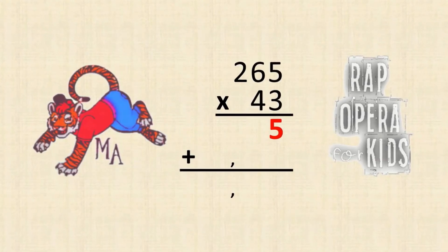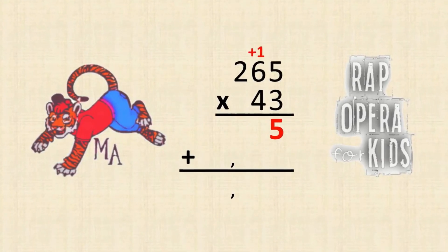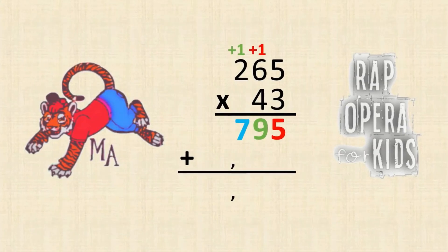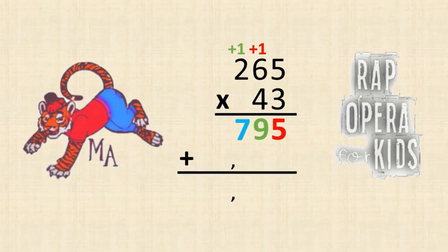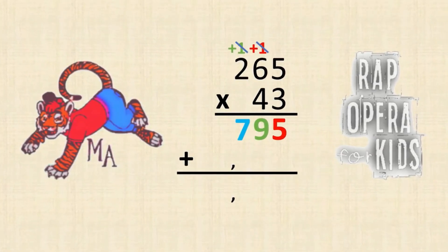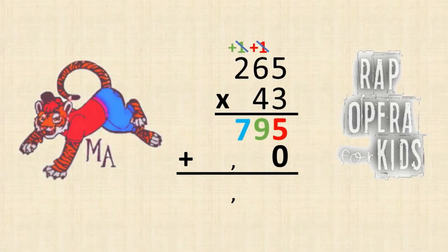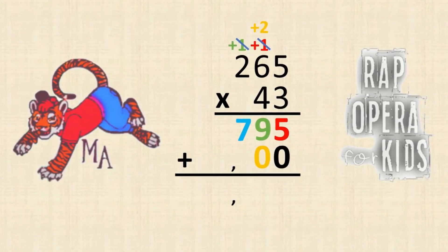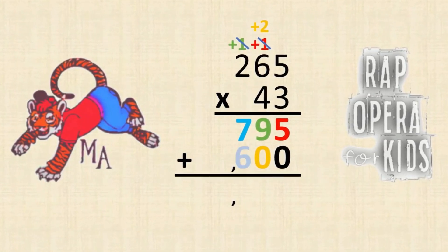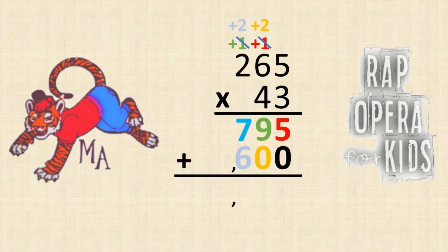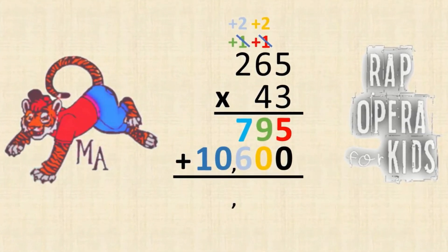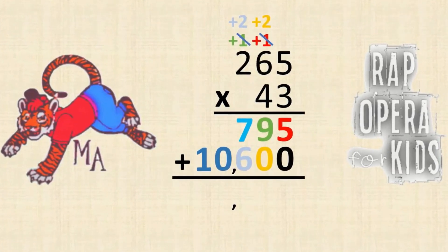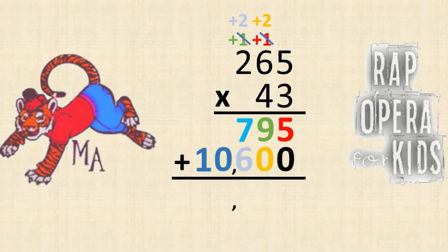Ones to ones, regroup if you need to. Ones to tens, regroup if you need to. Ones to hundreds, regroup if you need to. Keep going till the end, add the zero. Tens to ones, regroup if you need to. Tens to tens, regroup if you need to. Tens to hundreds, regroup if you need to. Keep going till the end, add the zero.